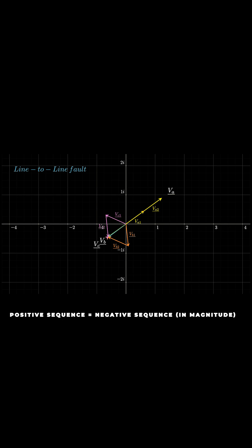In this scenario, the current in line B returns via line C, hence the equality between the two sequences.